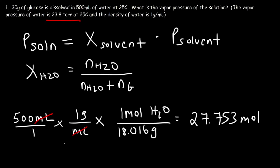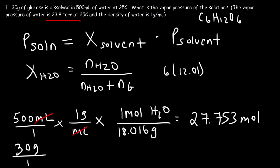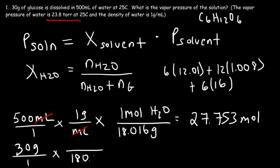Now let's calculate the moles of glucose. We have 30 grams of glucose, and the chemical formula of glucose is C6H12O6. We need to find the molar mass of glucose: 6 times the atomic mass of carbon (12.01), plus 12 times the atomic mass of hydrogen (1.008), plus 6 times the atomic mass of oxygen. The molar mass of glucose is 180.156 grams per mole. So 30 divided by 180.156 is 0.1665 moles of glucose.